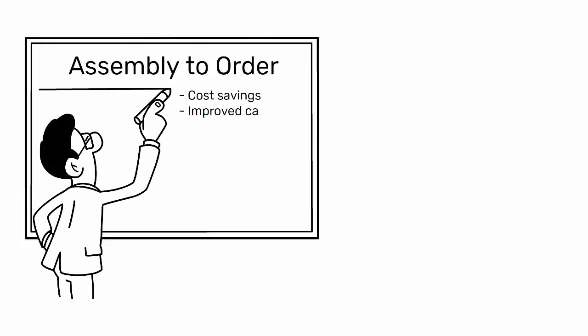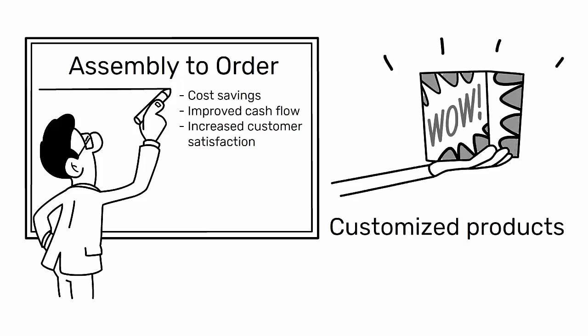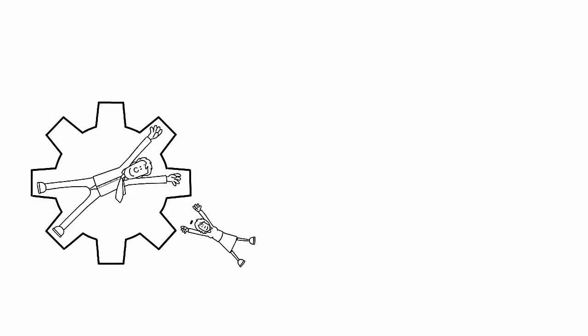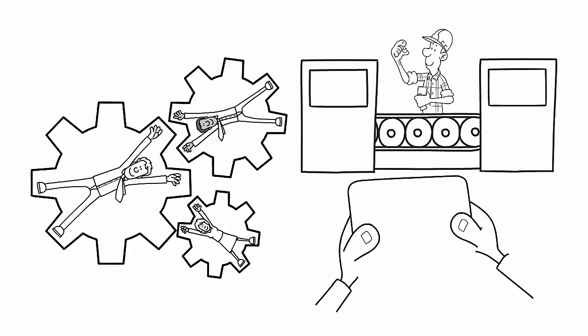In summary, assembly to order is a production strategy that can lead to cost savings, improved cash flow, and increased customer satisfaction by providing customized products. However, it requires a well-coordinated and efficient production process to be successful.